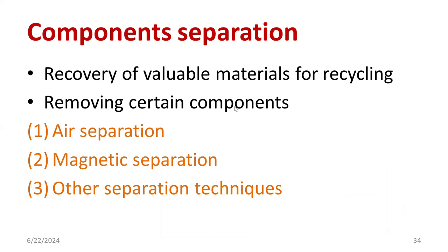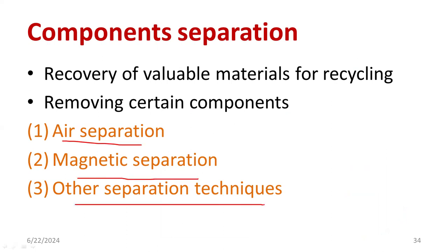Sometimes some valuable items might be there in the group of waste. We need to separate them using the following techniques, depending on the weight, size of the particle, material, etc. There are following techniques available to separate the components: we have air separation, magnetic separation, and other methods like optical methods. We are going to discuss them individually.